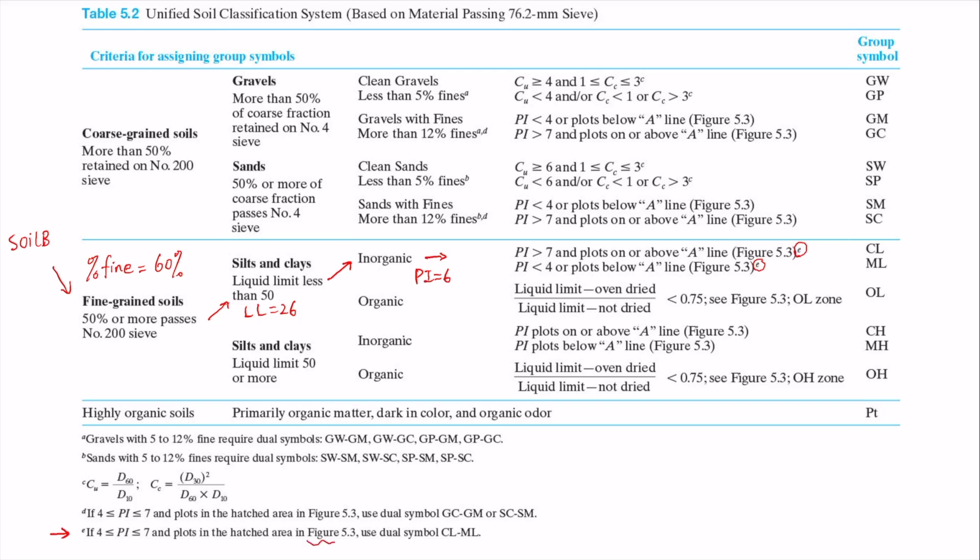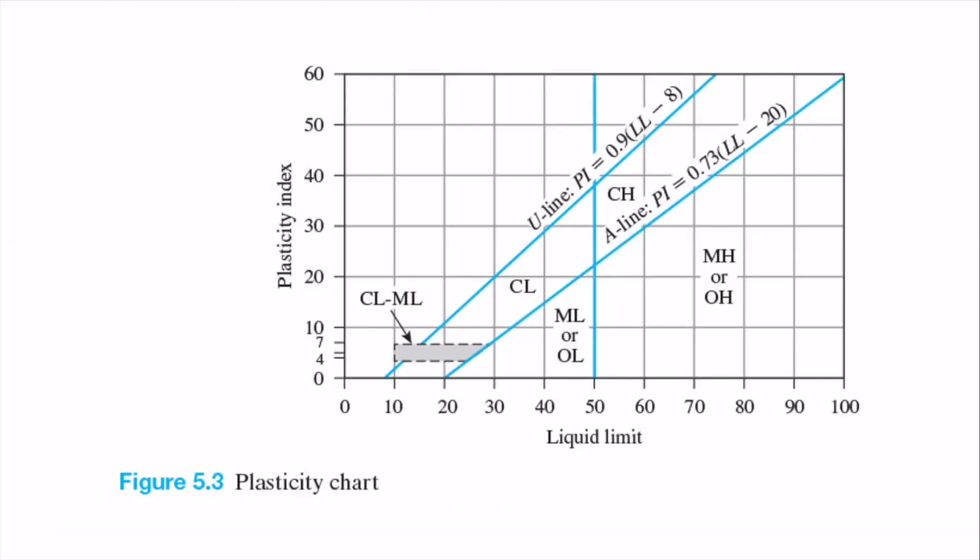So figure 5.3 is plasticity chart. This is that figure, plasticity chart. So let's plot our soil B on this plasticity chart. LL is 26, and PI is 6. So soil B is right here. So this is soil B. And the coordinates are 26 and 6. So LL is 26, PI is 6.